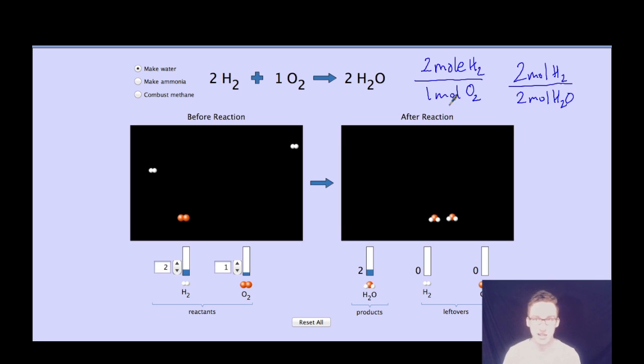These are your mole ratios that give you the comparisons between two different things in your chemical equation. Again, go back to the idea of the sandwiches. This is my recipe for making water. For every two moles of water that I want to make, I need two moles of hydrogen and one mole of oxygen.